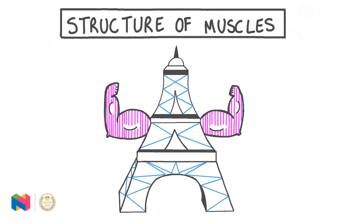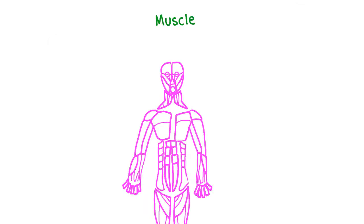In this video we will learn how to describe the structure of muscles by first exploring the different types of muscle, before looking at skeletal muscles in more detail on both a macroscopic and microscopic scale. We will learn how skeletal muscle fibers are specialized for their function of providing movement to various parts of the human body.